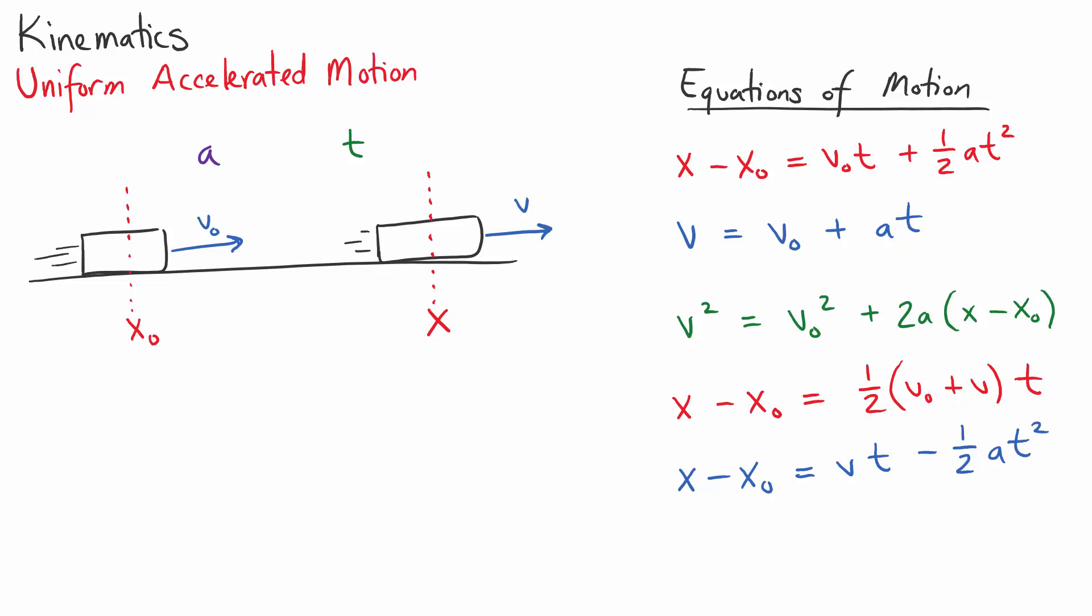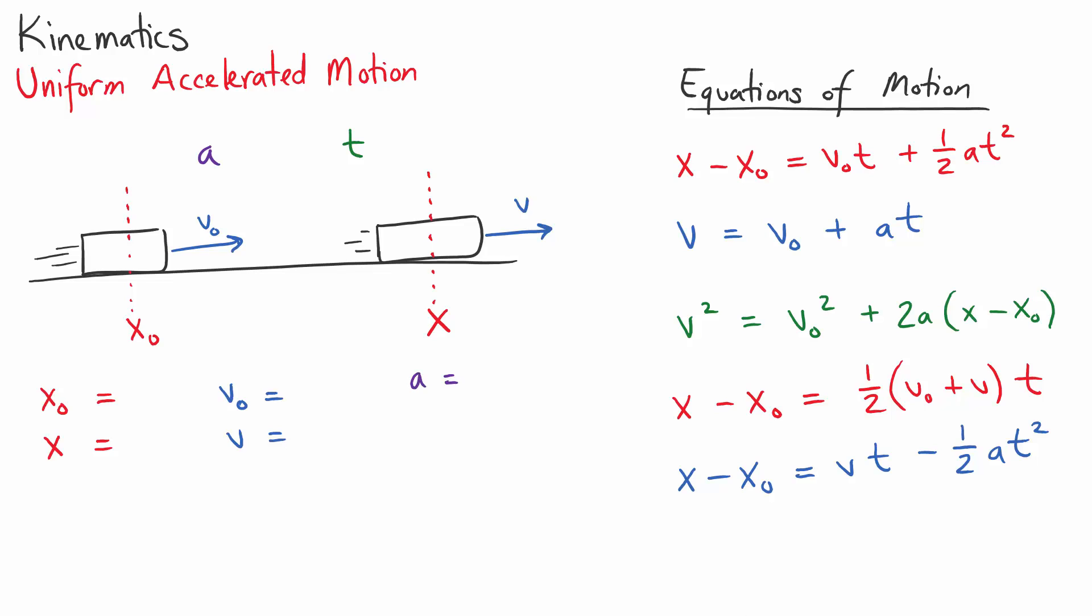The hardest part about solving uniform accelerated motion problems is knowing which equations to use. There's five of these equations. How do you know which one you're supposed to apply? I found that the easiest way to do this is to actually list out the quantities that are given in the problem. So you put your two positions, the initial and the final position. You put your two velocities, the initial velocity, the final velocity, and then you write down the acceleration, and finally, the time.